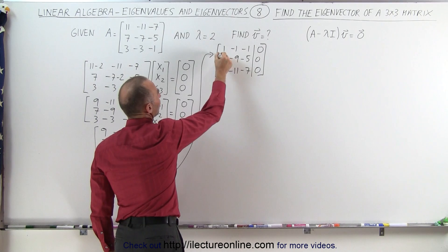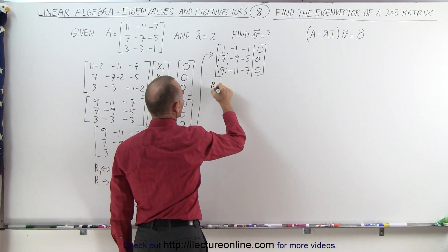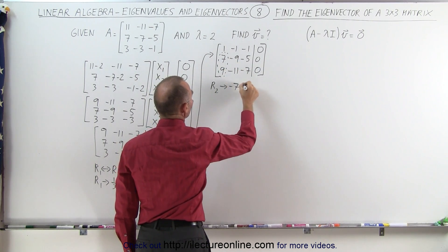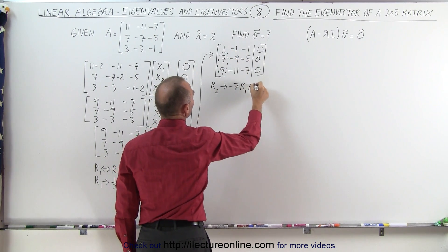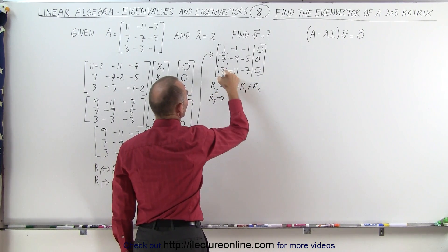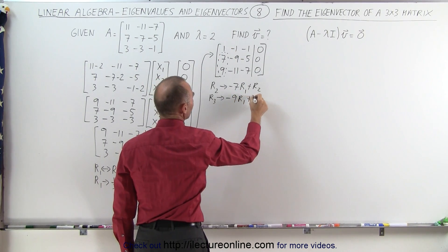Next, we're going to get rid of these two elements by using this one up here. So we take R2 and replace it by the negative of that number, times the row with the 1 in it, and adding it to R2. We take R3, the negative of this number, 9, multiply times the row with the 1 in it, and adding it to R3.